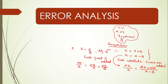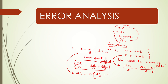The fractional error is added. The absolute error in Z equals Z multiplied by the quantity Delta A by A plus Delta B by B. This completes the composition of errors for multiplication and division.